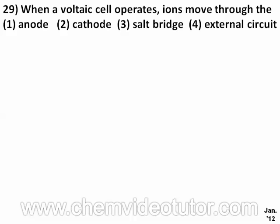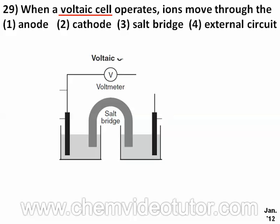Question number 29: when a voltaic cell operates, ions move through the? The keywords in this question are voltaic cell. A voltaic cell is like a homemade battery and may look something like this. A battery produces electricity by having two metals of different reactivity levels,